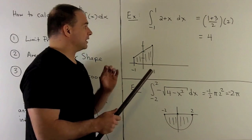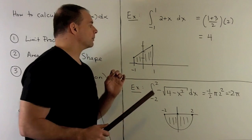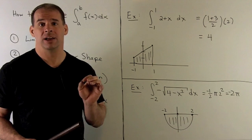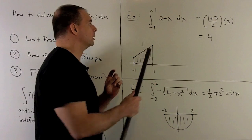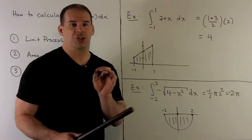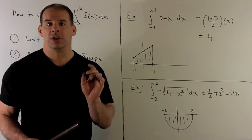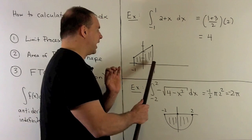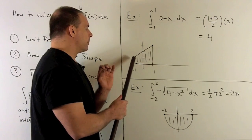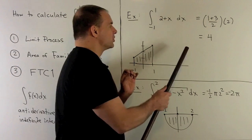First example: we're going to take the definite integral from minus one to one of the function (2 + x) with respect to x. Sketching the function — it's going to be a straight line, slope one, y-intercept two — and we're integrating over the interval from minus one to one. The function is positive over our region, so I'm looking at actual area. The area of a trapezoid is one-half the sum of the heights times the length of the base, so this definite integral is going to be equal to four.